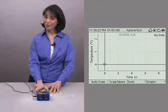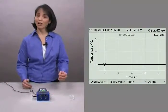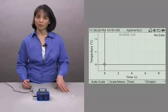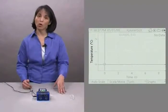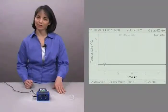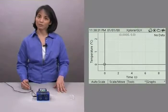And did you notice what happened? The GLX automatically recognized the temperature probe and plotted temperature on our y-axis and time on our x-axis. It's now ready for some data.